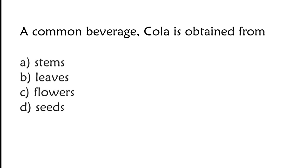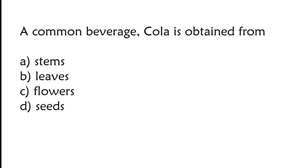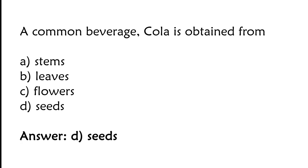A common beverage cola is obtained from — options: stems, leaves, flowers, seeds. The correct answer is option D. A common beverage cola is obtained from seeds.